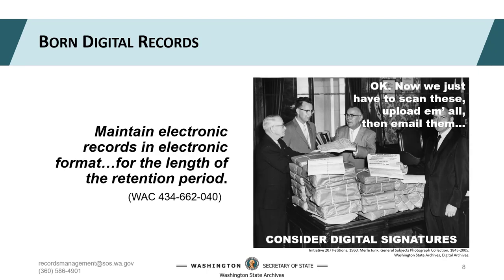A record's digital or physical format is not going to determine whether it's a public record, but it can determine how to retain the records. The Washington Administrative Code, or WAC, establishes that electronic records must be retained in electronic format. Printing and retaining a copy of a born-digital record will not be an acceptable substitute. There is important metadata associated with electronic records that verify the record's authenticity — print an electronic record and you lose that metadata. Keep that in mind when it comes to emails, tweets, or text messages. You need to keep electronic records in their electronic format.